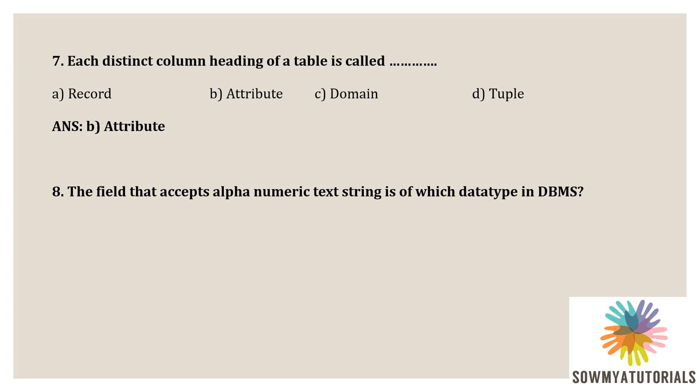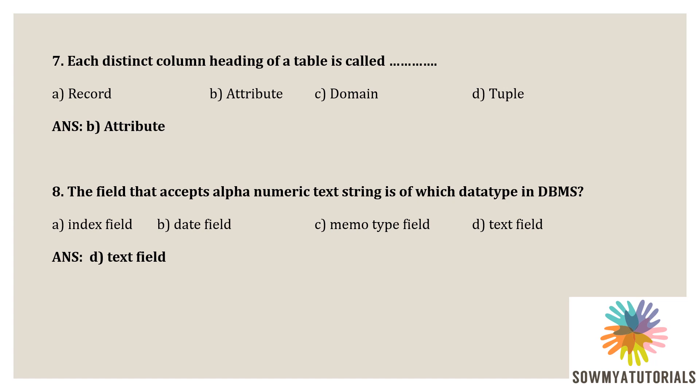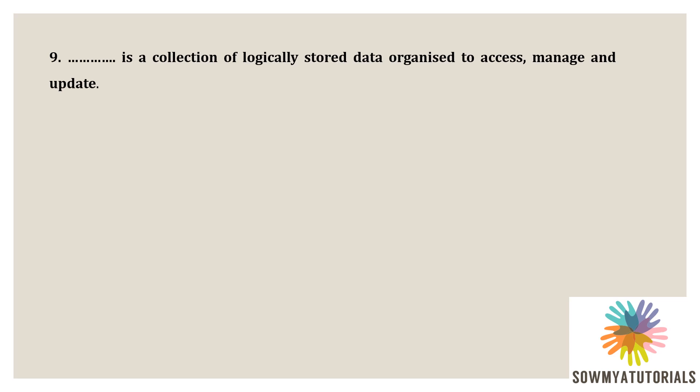Next question: the field that accepts alphanumeric text strings is of which data type in a DBMS? Options are A) index field, B) date field, C) memo type field, D) text field. The correct answer is D — text field. A text field accepts data as an alphanumeric text string, accepting either alphabets or numeric format.